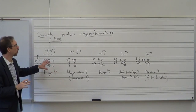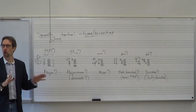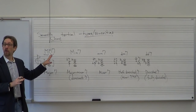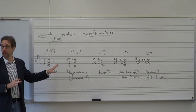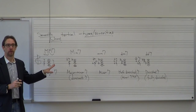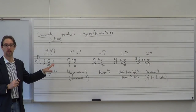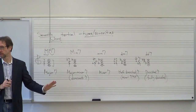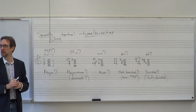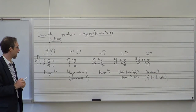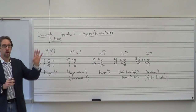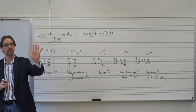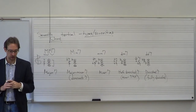These are our five common sonority types for seventh chords. There are more types of seventh chords, but these are the common ones — that's all we'll deal with for right now. Four types of triads that are commonly used, five types of seventh chords.